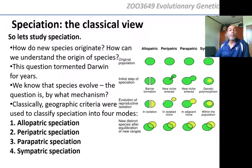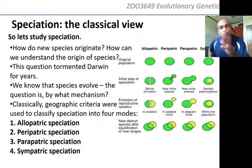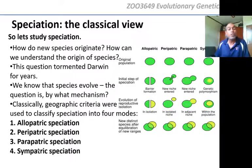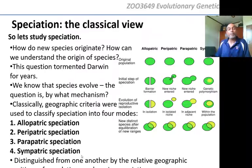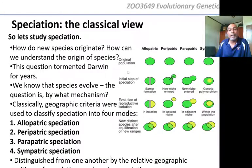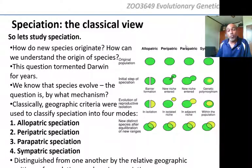So here are your four classical modes of speciation, all of which you've studied in second year, first year, and at school. What defines these four modes is the geographic position of the populations. In allopatric, they're separated. In peripatric, they're separated. In parapatric, they're not fully separated. And in sympatric, they are not separated at all — they're completely overlapping. All four involve some kind of geographic separation.